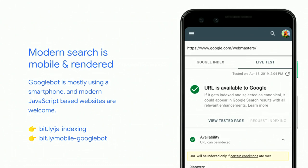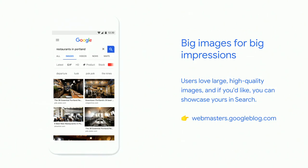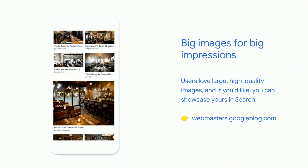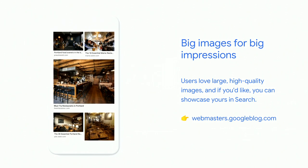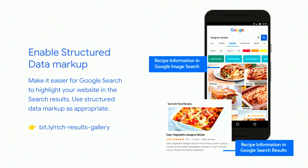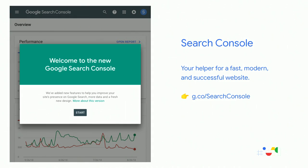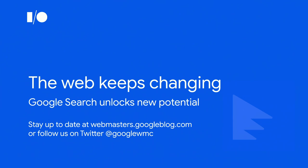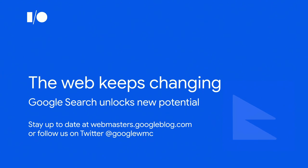To sum it up: Googlebot is now mostly smartphone and we're continuing that journey. JavaScript is welcome. Users love high-quality large images, and showcasing your site in Google products like Search and Discover will have more updates soon. There are many ways your content can be highlighted in search, so check out the Search Gallery and our documentation. Use Search Console to get the most out of search. The web keeps evolving — it's a powerful platform, and Google Search is here to help your users unlock its potential. Thank you very much.